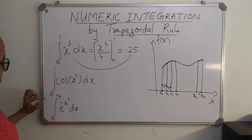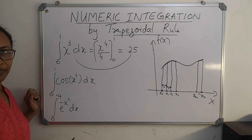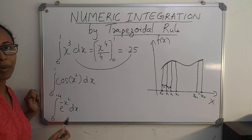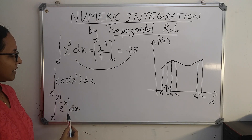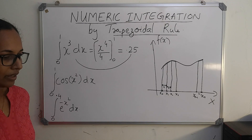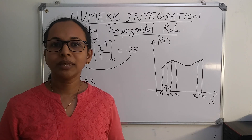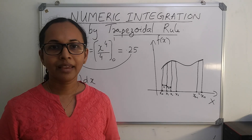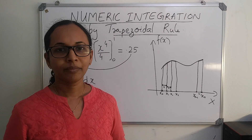Consider these examples: we don't have any analytic functions for integrating cos(x²) or e raised to minus x squared. But we can evaluate these definite integrals using the method of numeric integration. There are many methods for performing this, but only two are included in your syllabus — trapezoidal rule and Simpson's rule. In this video, I will be explaining the trapezoidal rule.